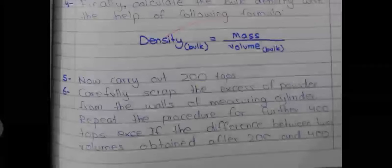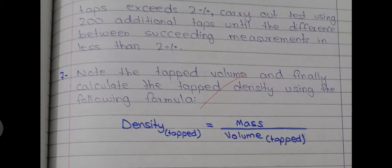You then repeat the procedure by doing 200 more taps, so you get 400 total taps. After the second set you do a third set as well. After the third set, if you see a difference of more than two percent you keep tapping in further sets of 200. But if you see a difference of less than two percent, that's fine — that is the maximum tapped density you can get. The formula for tapped density is mass over tapped volume. By tapping, we reduce air spaces so the powder is closer together and occupies a smaller volume.